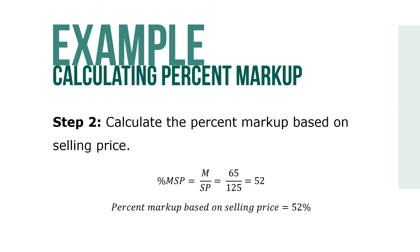Calculate the percent markup based on selling price. Percent markup based on selling price equals M over SP, so that's 65 over 125, which gives us a percent markup based on selling price of 52%.